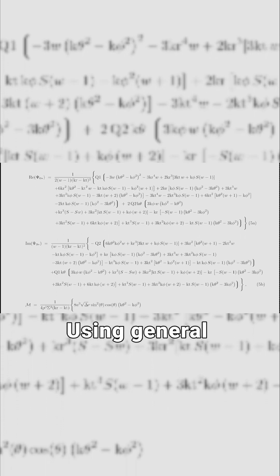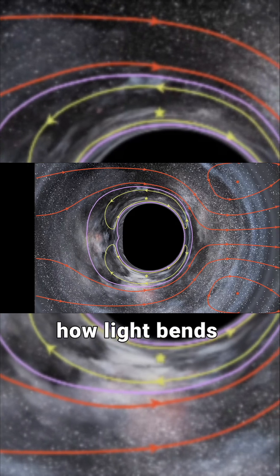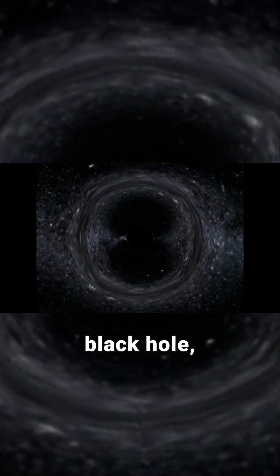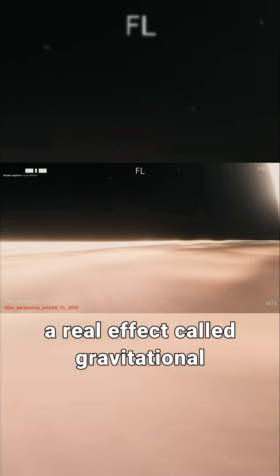Using general relativity equations, the VFX team at Double Negative simulated how light bends around a spinning black hole, creating that glowing halo, a real effect called gravitational lensing.